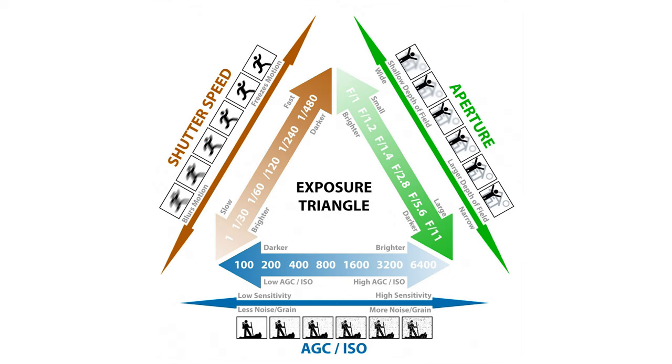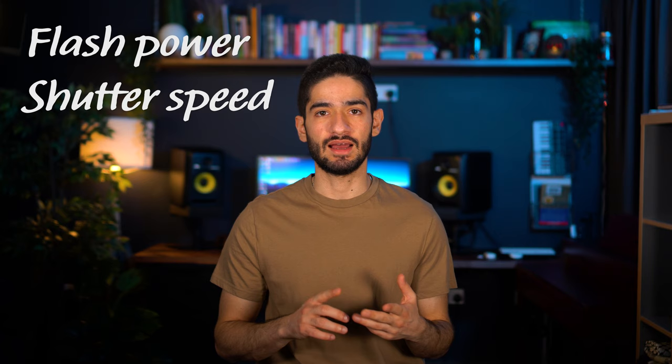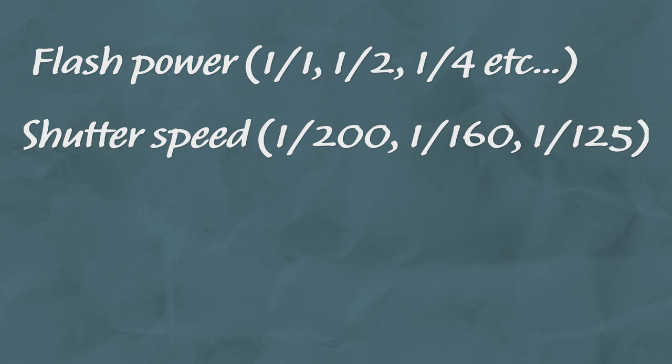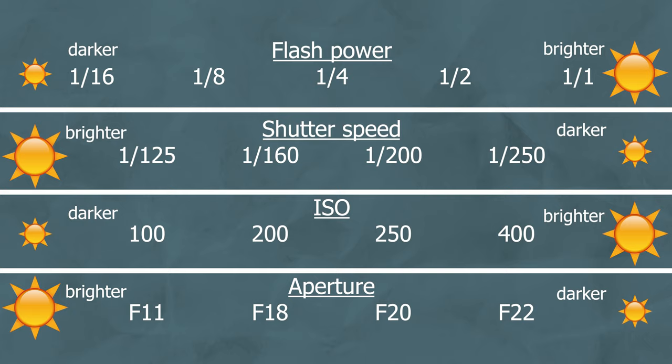Increasing the ISO increases the sensitivity of the sensor to light, making your photos a bit brighter. This is why it's important to have a basic understanding of these settings so you can change them to find what works for your setup. When troubleshooting, stick to changing the flash strength, shutter speed, and ISO — if you change the aperture you might make focusing harder and end up with fewer teeth in focus. The order I recommend: always try changing the flash power first, then shutter speed (no longer than 1/125), then ISO.